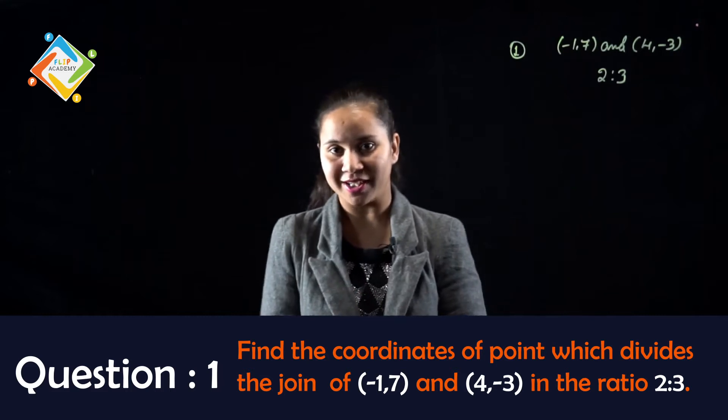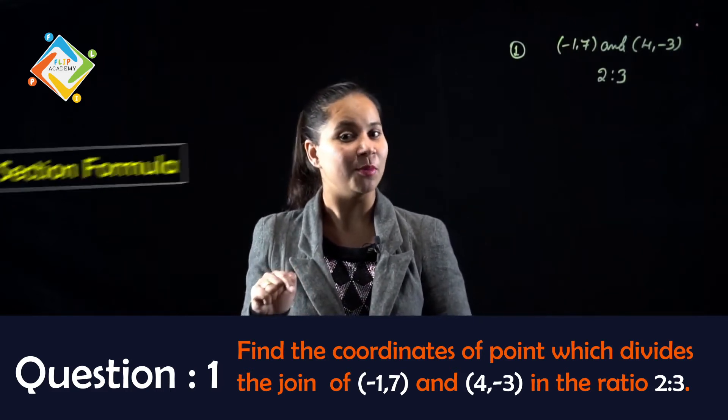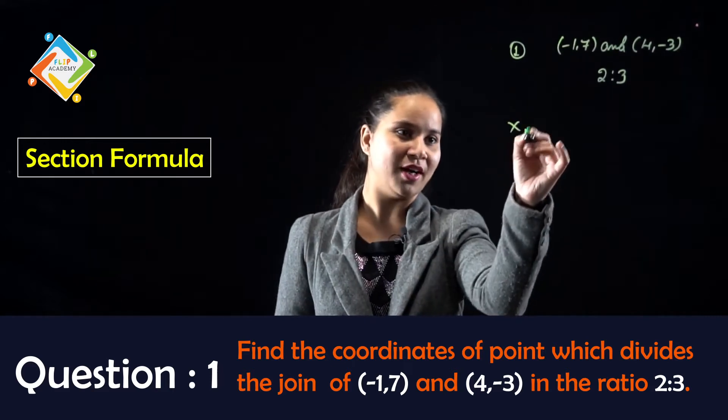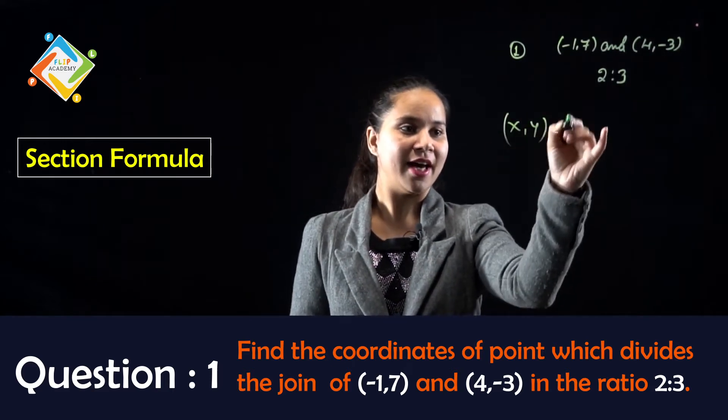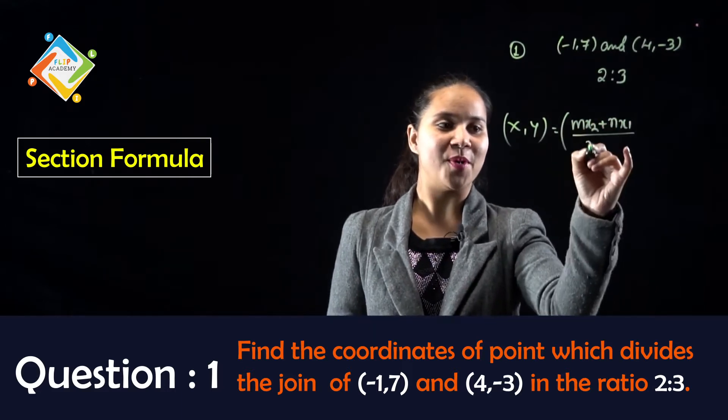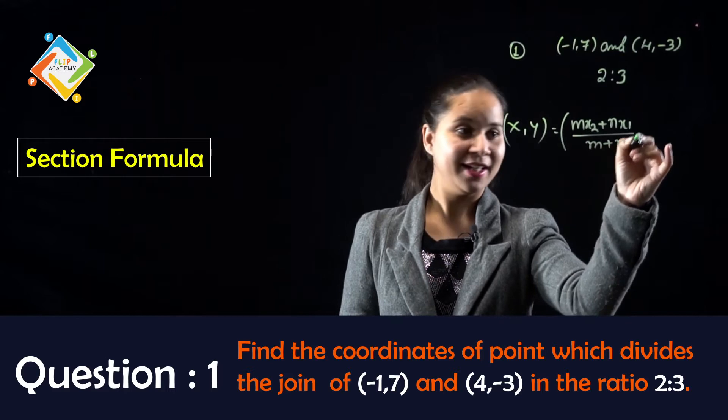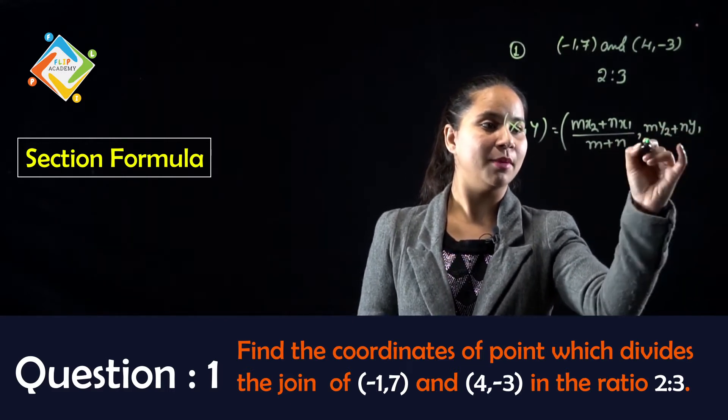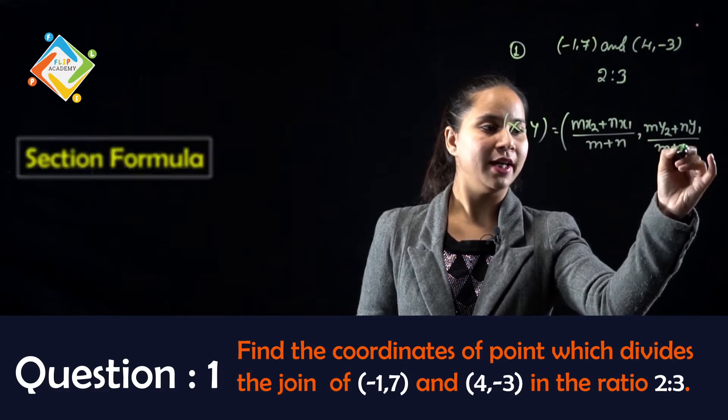The section formula is (x,y) equals (m·x2 + n·x1)/(m+n), and similarly (m·y2 + n·y1)/(m+n).